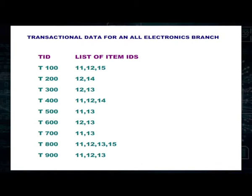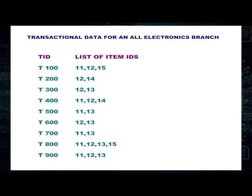Let us see an example of Boolean association rules using transactional data for an electronics branch. The table has two columns: the first represents transaction IDs and the second represents the list of items bought in each transaction. For example, T100 contains items I1, I2, and I5. What we need to concentrate on is the items which are repeated across all transactions — item sets like I1 and I3, or I1 and I2, occur together frequently. We need to find out how frequent these item sets are.